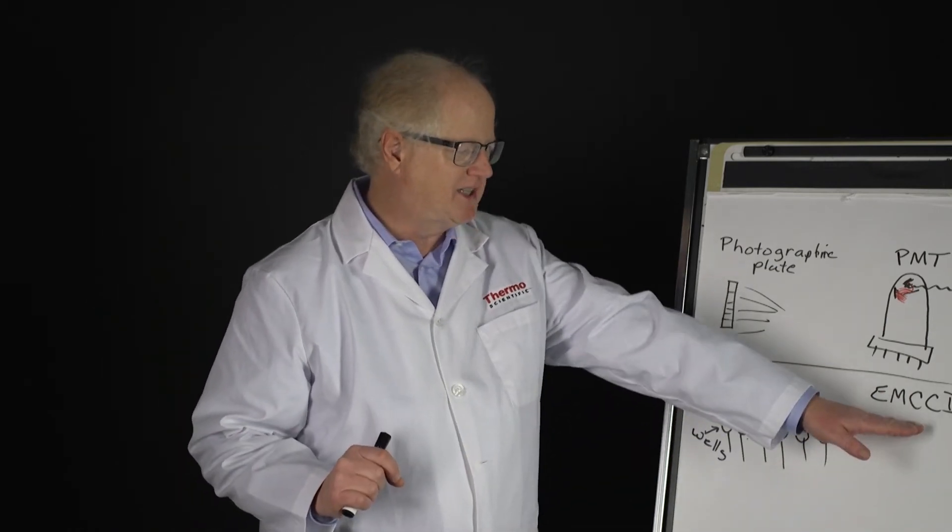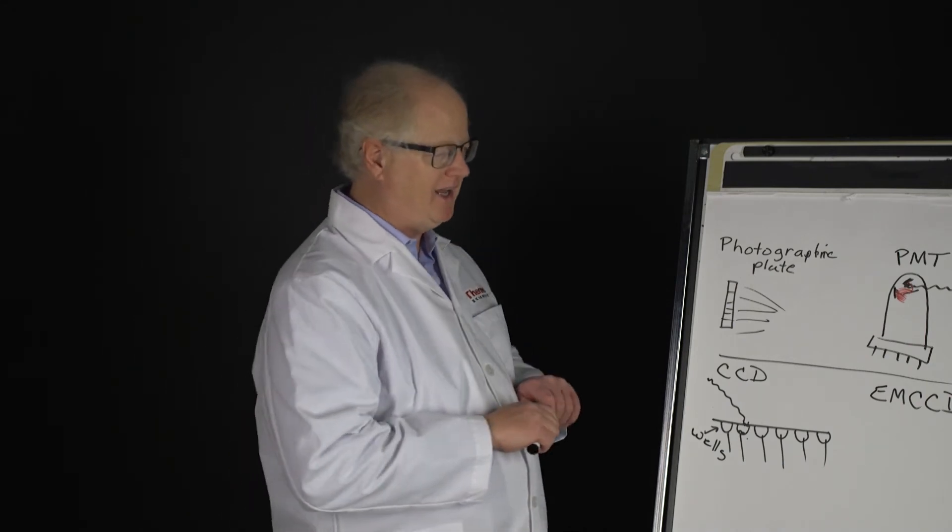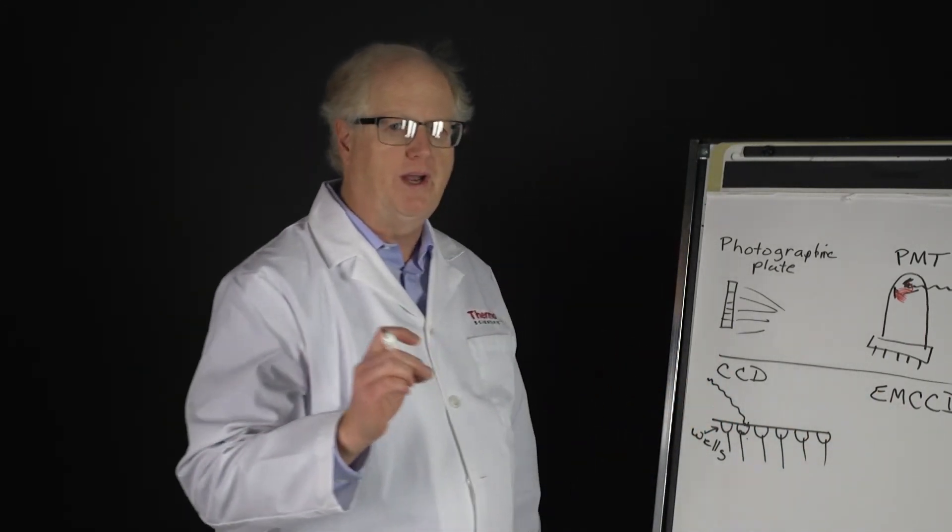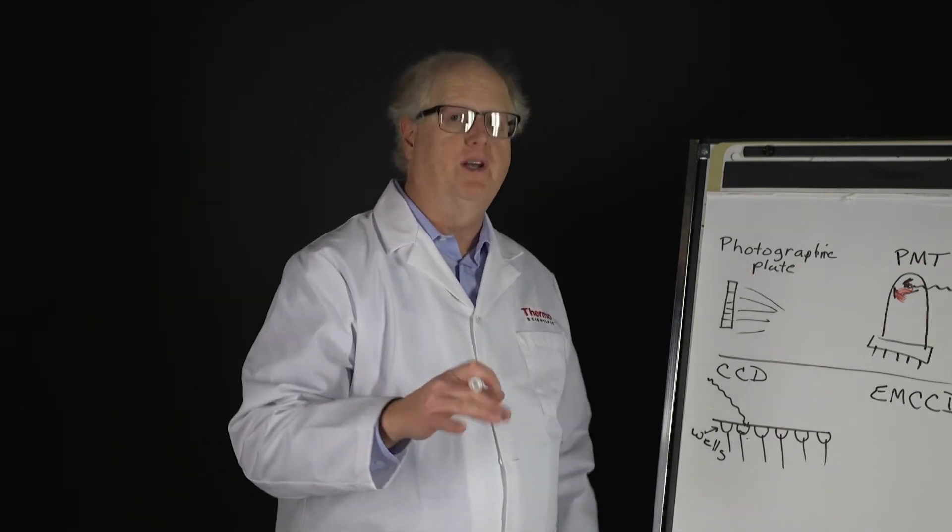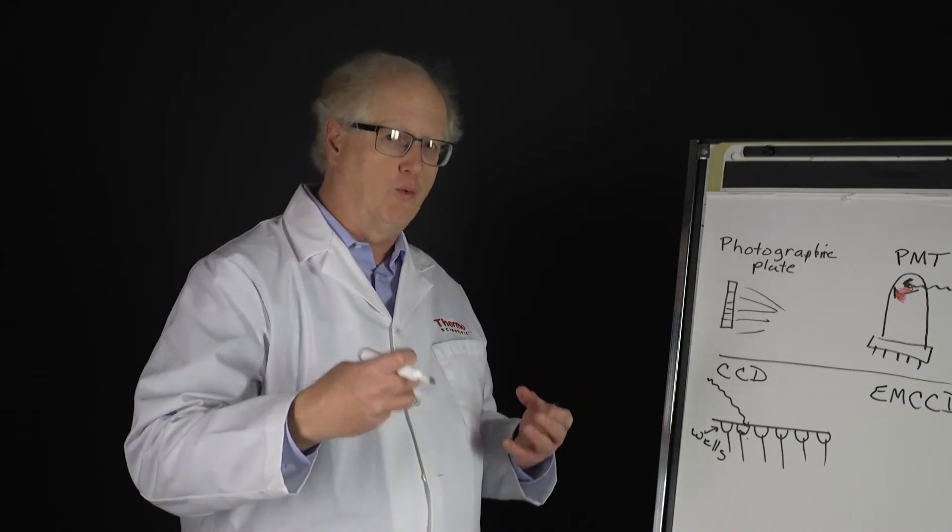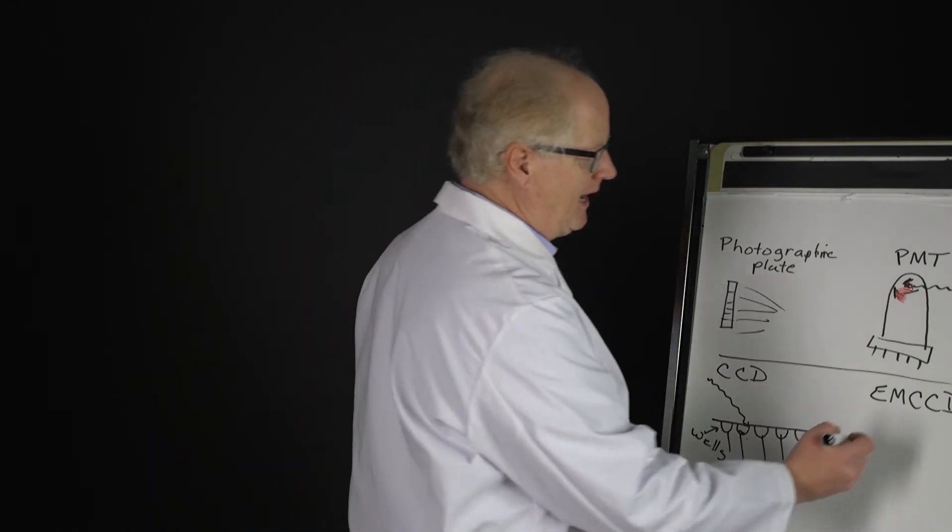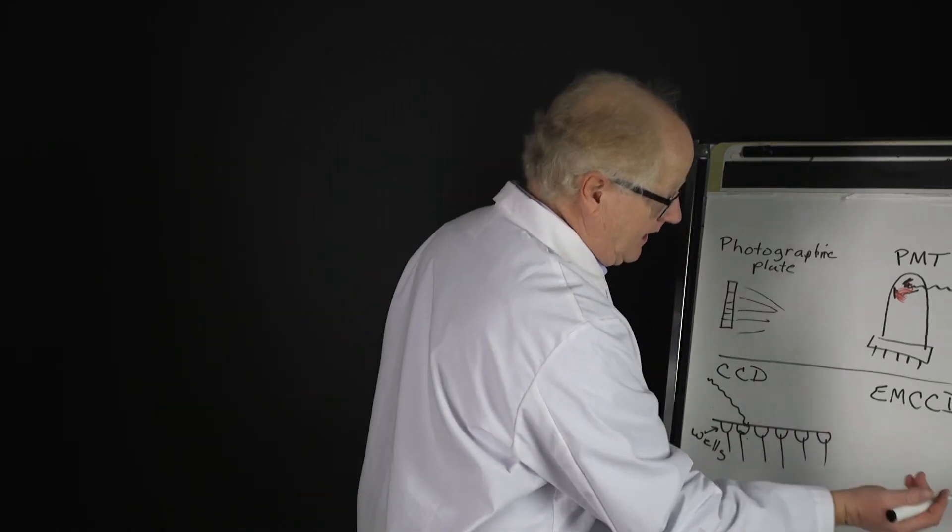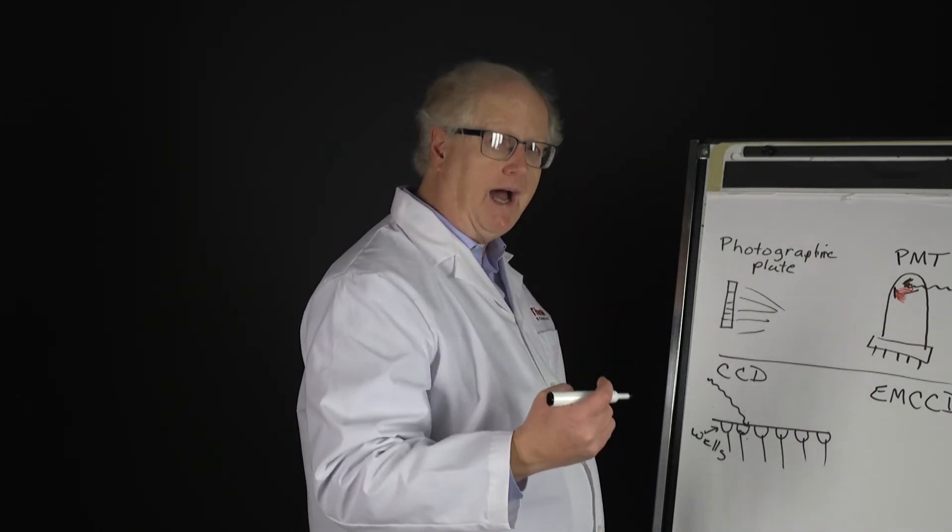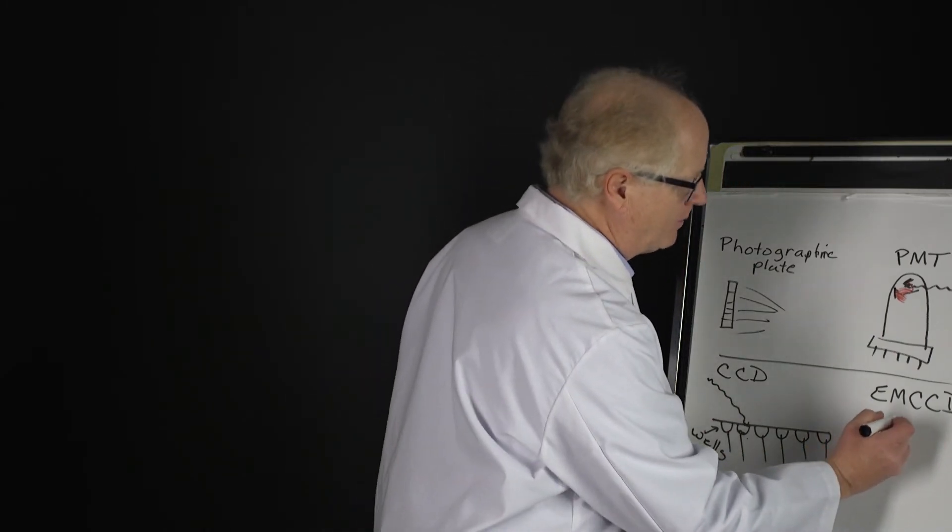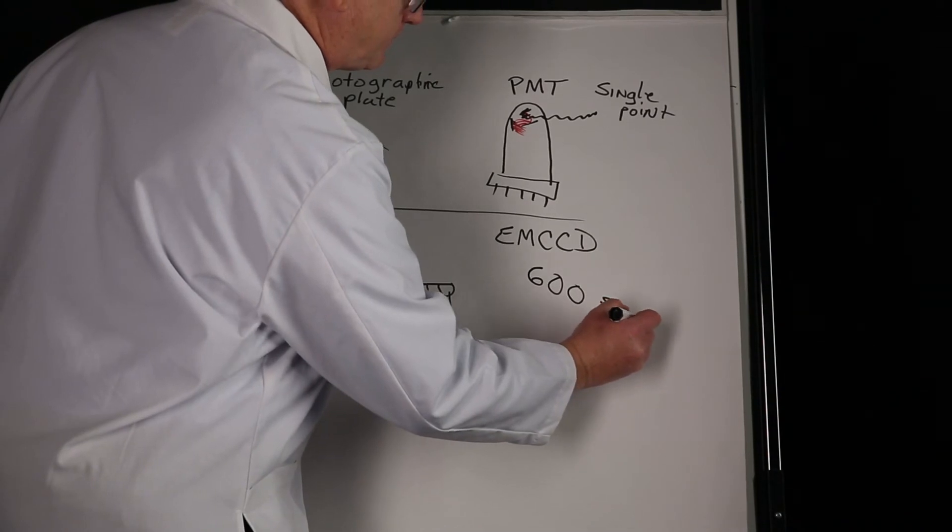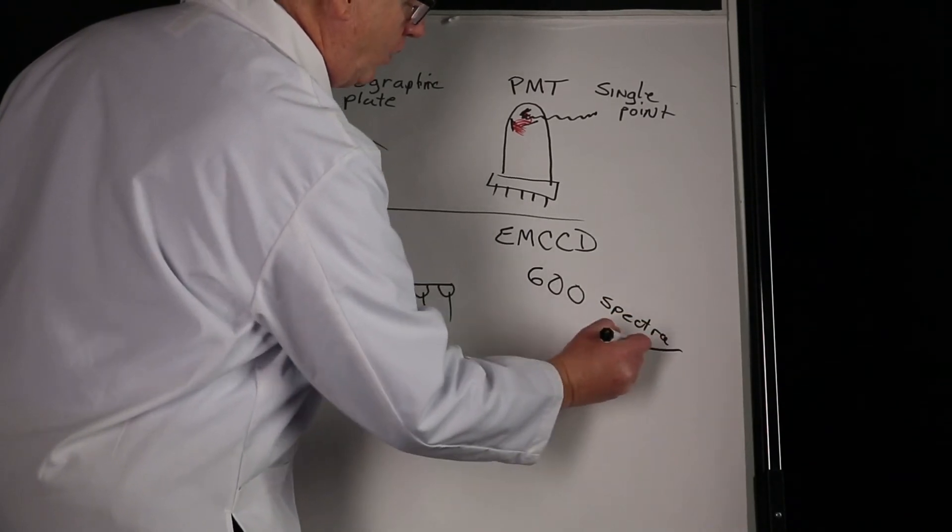The EMCCD is heavily used in high speed imaging purposes. The EMCCD by the nature of the way it works is able to collect that low light signal, amplify it, and then you can read it very quickly. This allows vendors to provide, as we do with our ThermoScientific DXR Xi imaging microscope, upwards of 600 or more spectra in one second.